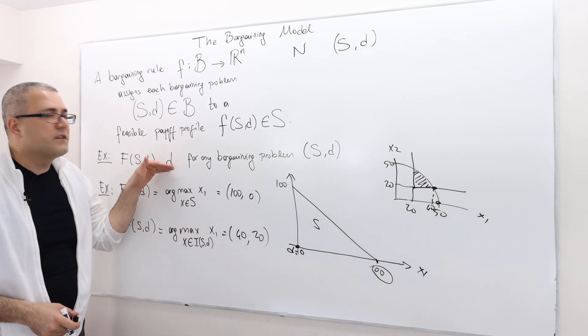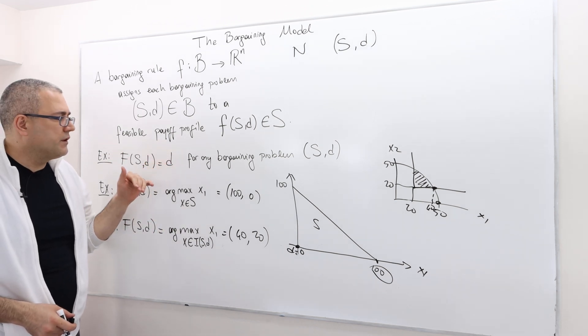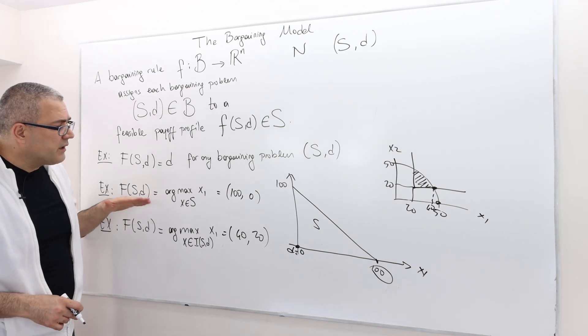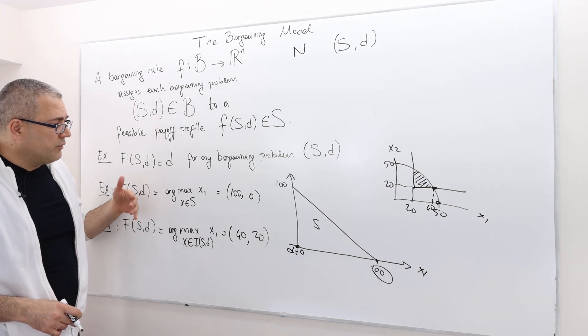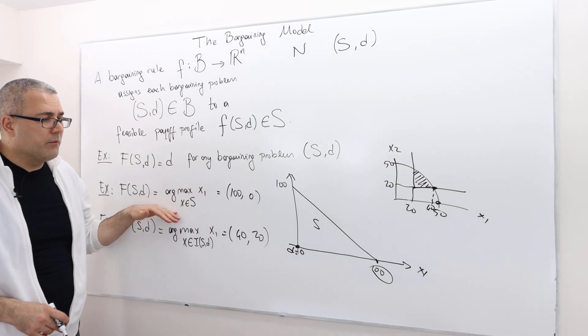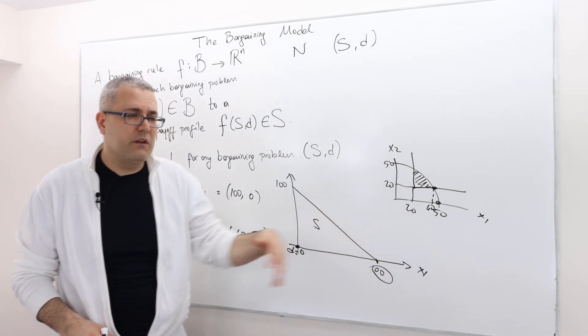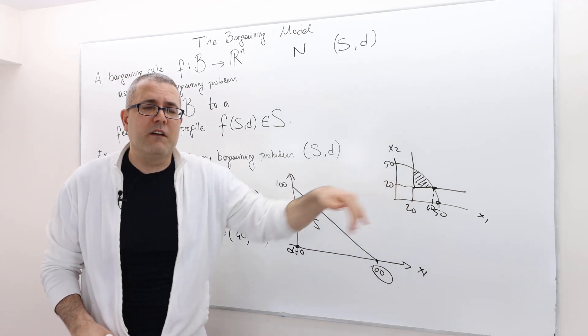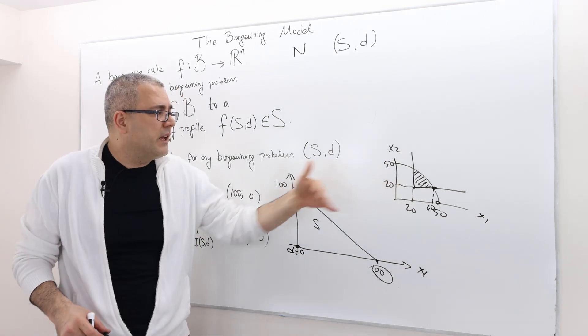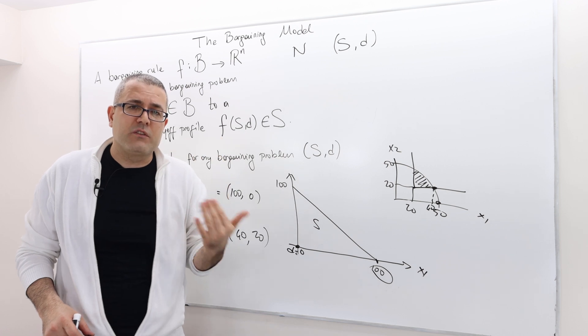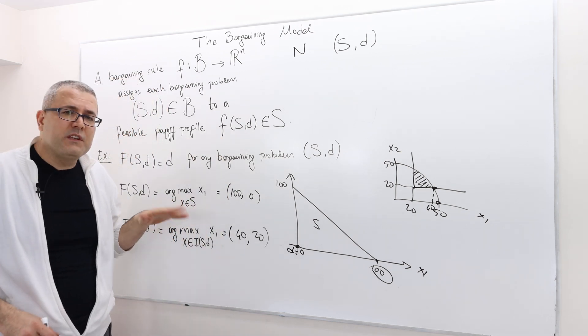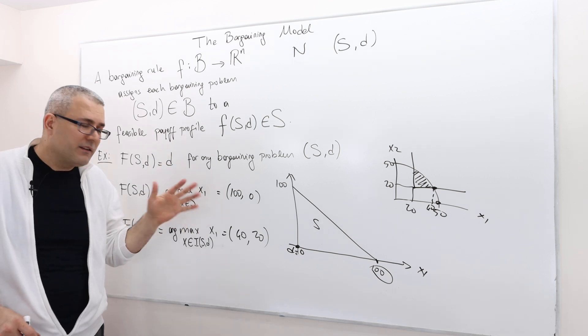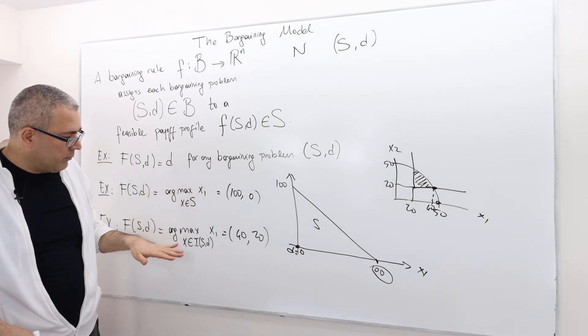So this is always going to be giving us inefficient outcomes, unless d is an efficient outcome. And then here in this problem, it is actually going to give us efficient outcome. It's always going to give us something on the boundaries, but the problem is sometimes it may give us, in some problems, it may give us not individually rational outcomes. So this rule is sometimes good, sometimes bad.